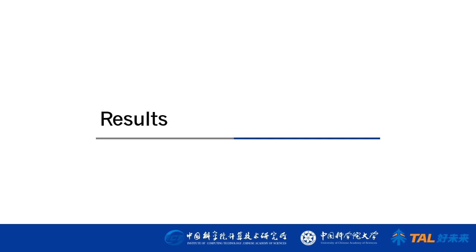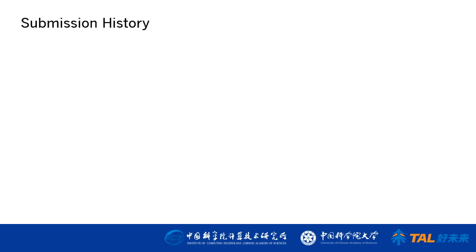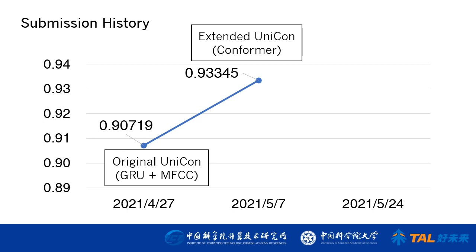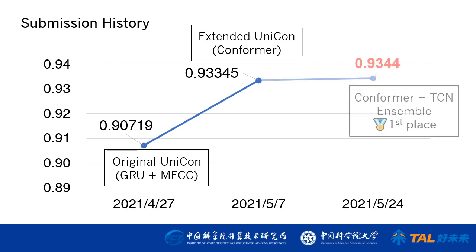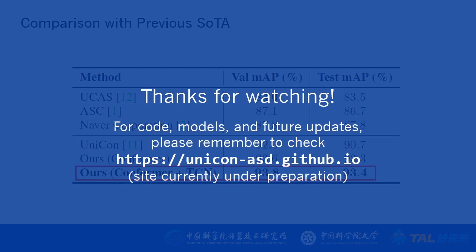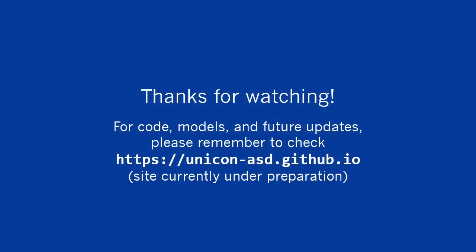Our final results: the original UNICON scores 90.7% MAP; our new extended UNICON scores 93.3%; our final submission ensembling logits from conformer and temporal convolution-based backbones scores 93.4% and ranks first on this year's leaderboard. Remarkably, none of these submissions used any form of pre-training. Our extended UNICON model outperforms the previous state-of-the-art by a large margin. Thanks for watching and please check our site for models and future updates.